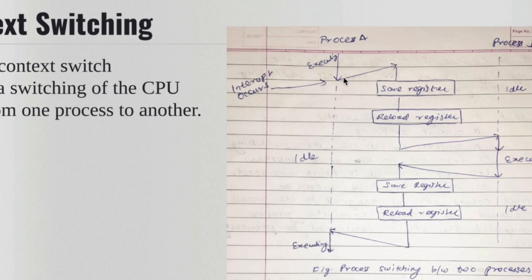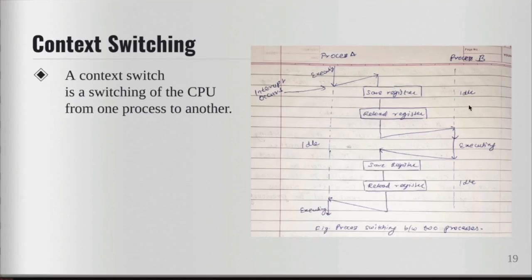Which means in simple words, while one process is executing an interrupt occurs, the CPU is switched from one process to another. And meanwhile we also save the context of the processes so that we can resume them when we want to. Process B has finished executing.